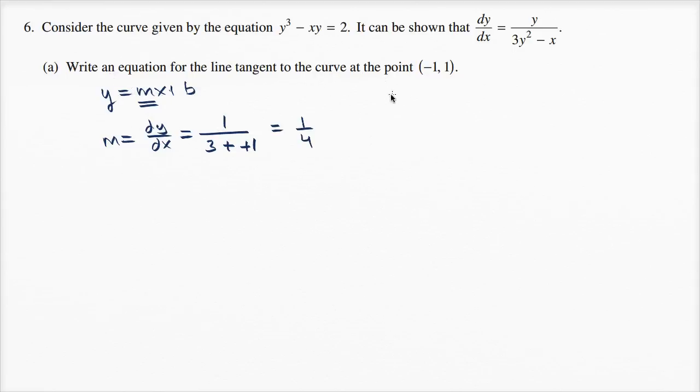The equation of our line is y = (1/4)x + b. Now we need to solve for b, and we know the point (-1, 1) is on the line.